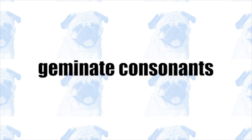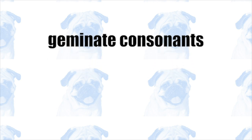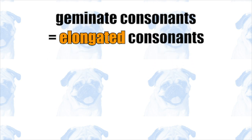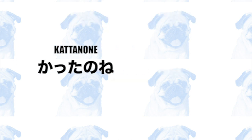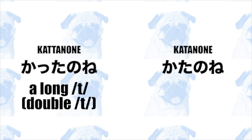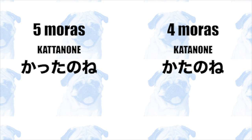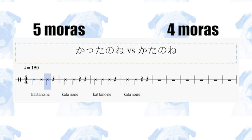We now proceed to the topic of geminate consonants. Geminate consonants are basically elongated consonants, and they are represented in Japanese by the small tsu. A normal consonant is one mora long, whereas geminate consonants take two moras to produce. Compare the following phrases: "katta no ne" and "kata no ne". The first phrase "katta no ne" contains the elongated t sound, so it contains five moras. The second phrase "kata no ne" does not contain a geminate consonant, and the t in this phrase is one mora long, so it only contains four moras.